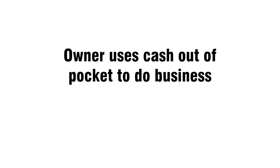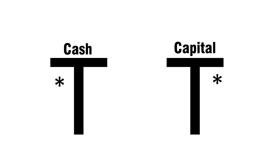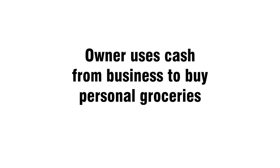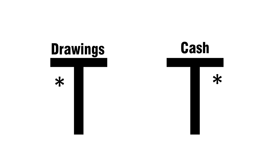Owner uses cash out of pocket to do business: debit cash, credit capital. Owner uses cash from the business to buy personal groceries: debit drawings, credit cash.